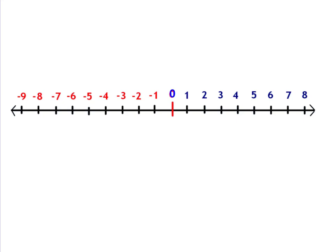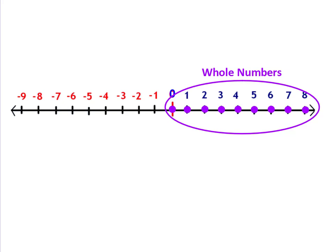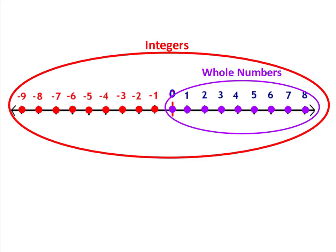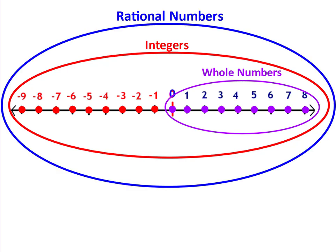Now I'm going to make a Venn diagram that has the number line inside of it so it's a bit easier to understand. First you have your whole numbers — remember it includes zero. The integers include the whole numbers and their opposites, so the circle includes the whole numbers. Finally, you have rational numbers, and that's everything. Rational numbers include the whole numbers, integers, and all of the numbers in between the whole numbers and the integers.